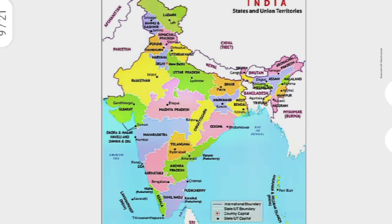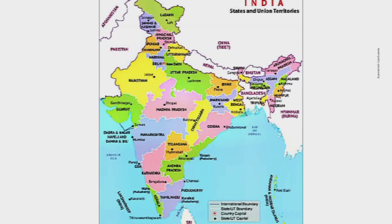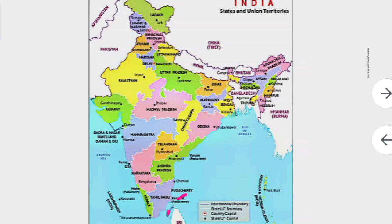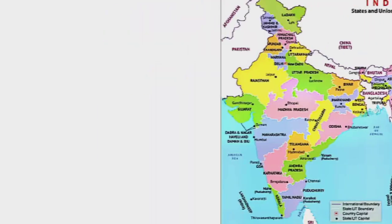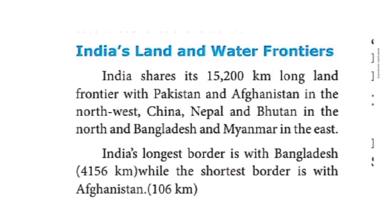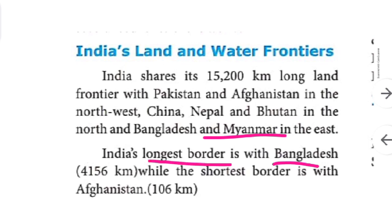The Palk Strait separates India and Sri Lanka. India shares its 15,200 kilometer long land frontier with Pakistan and Afghanistan in the north-west, China, Nepal, and Bhutan in the north, and Bangladesh and Myanmar in the east.